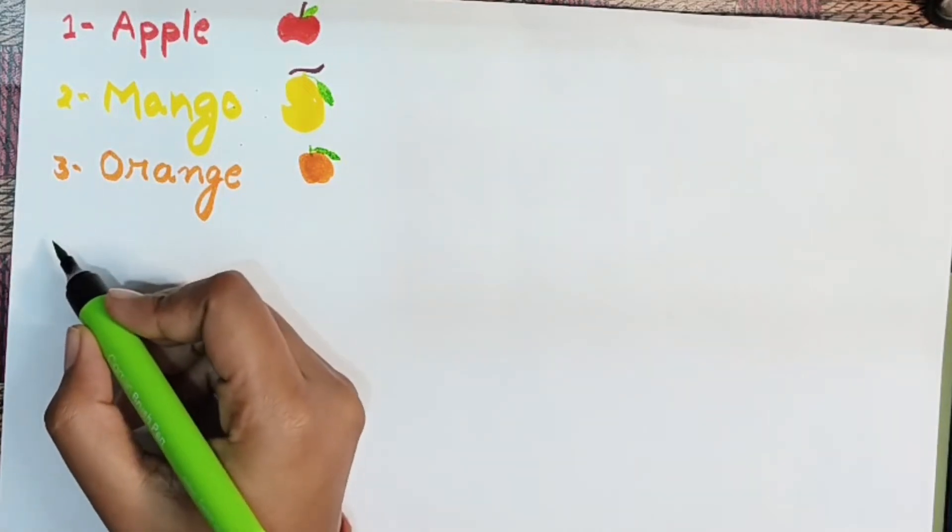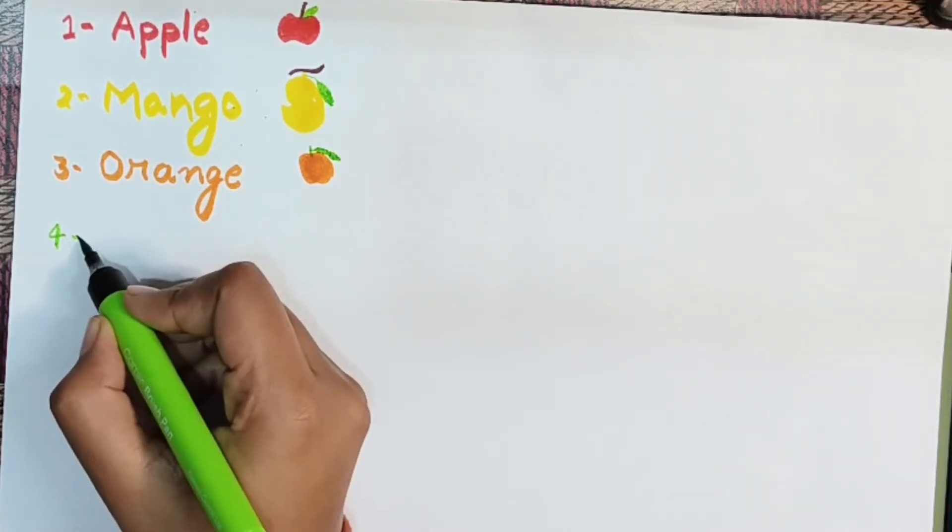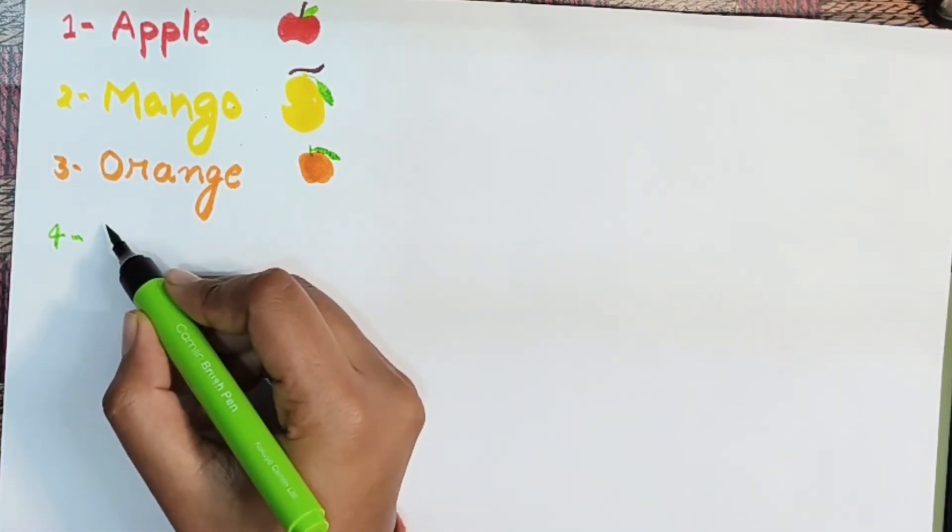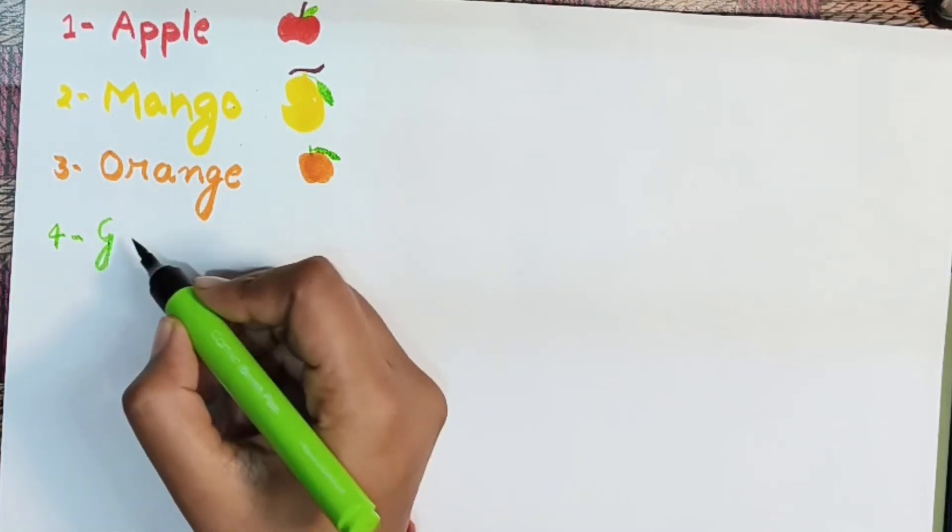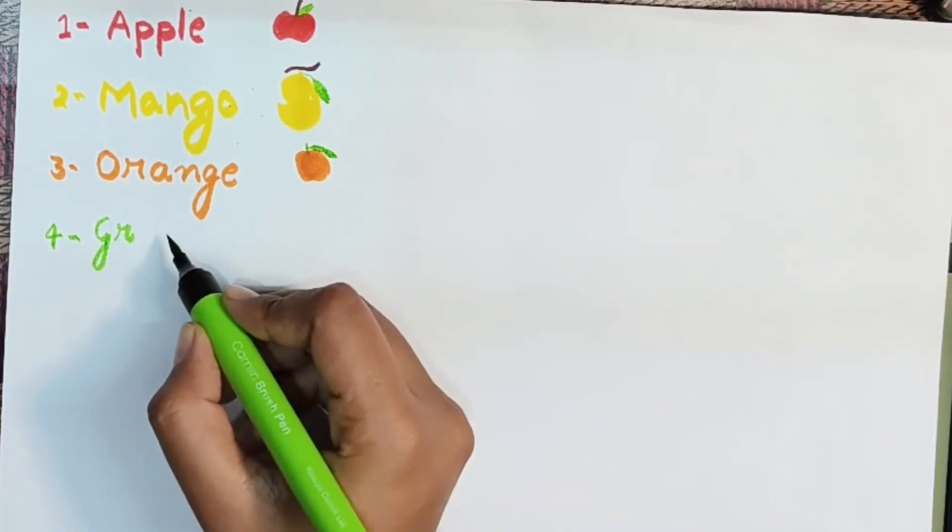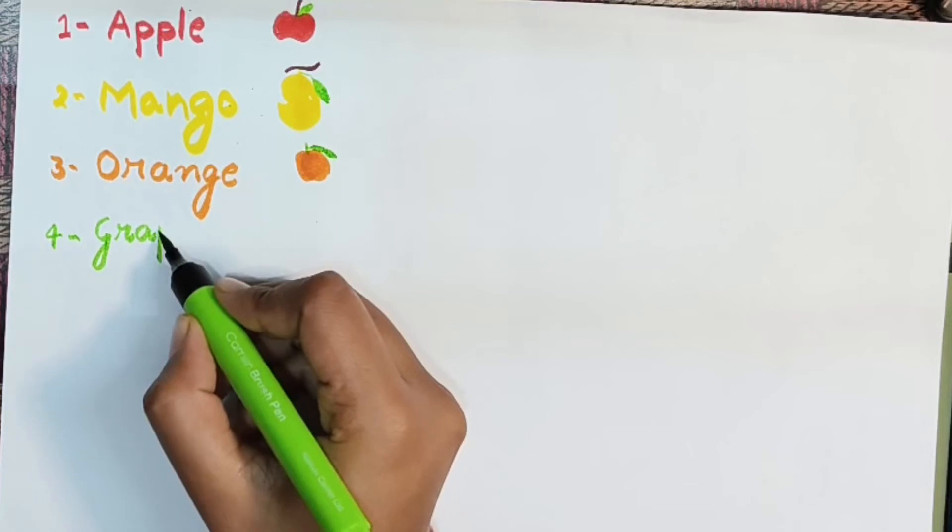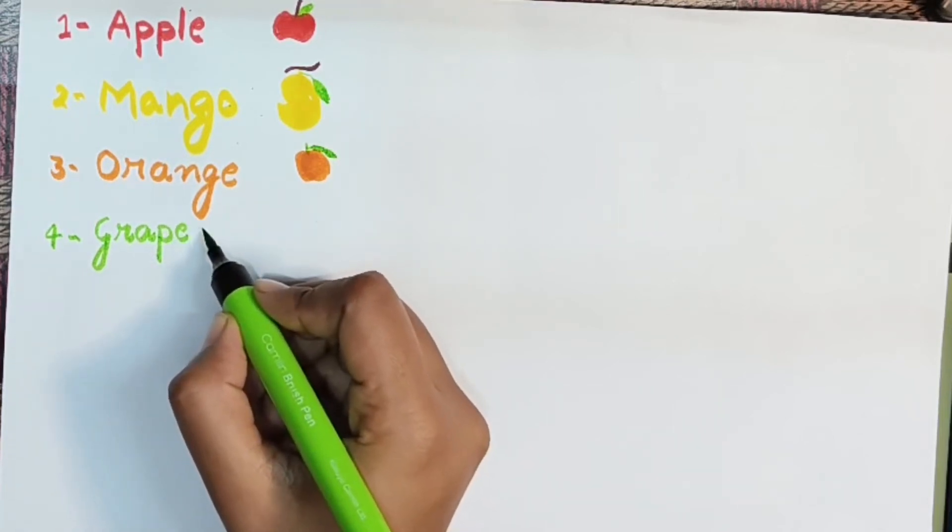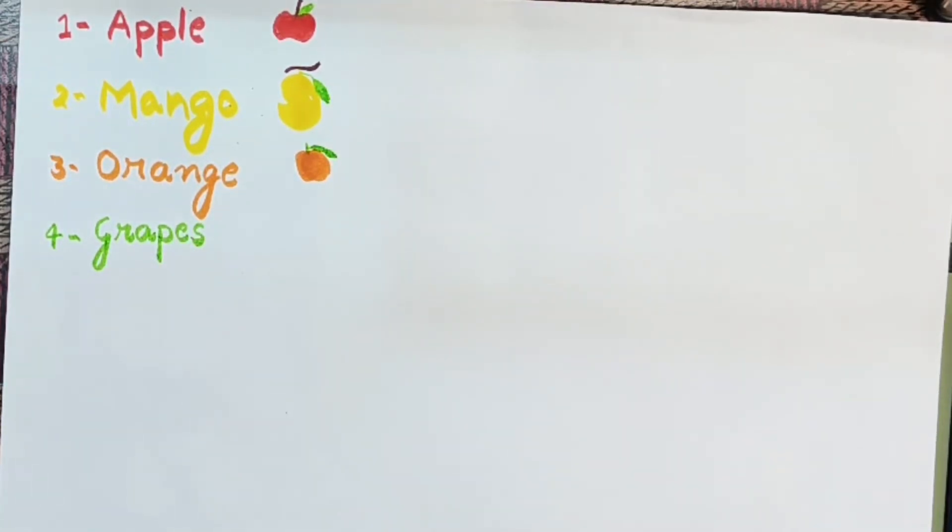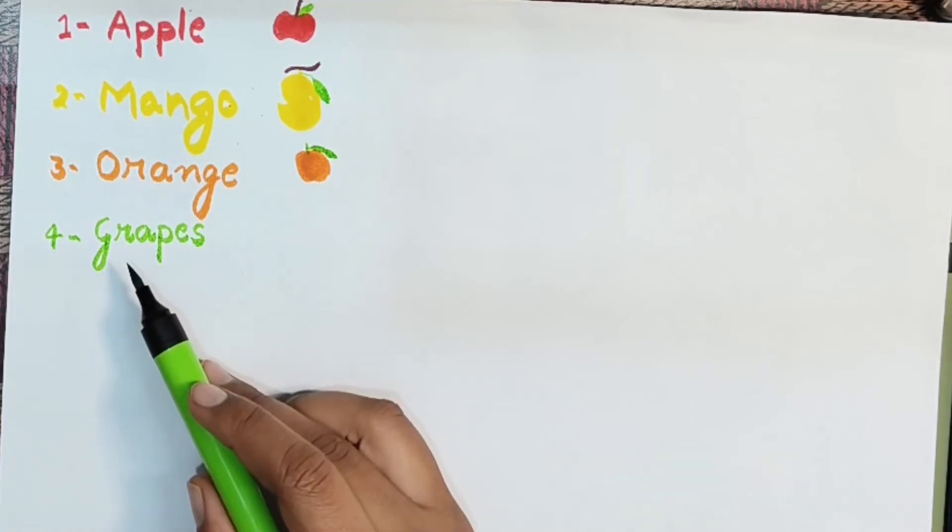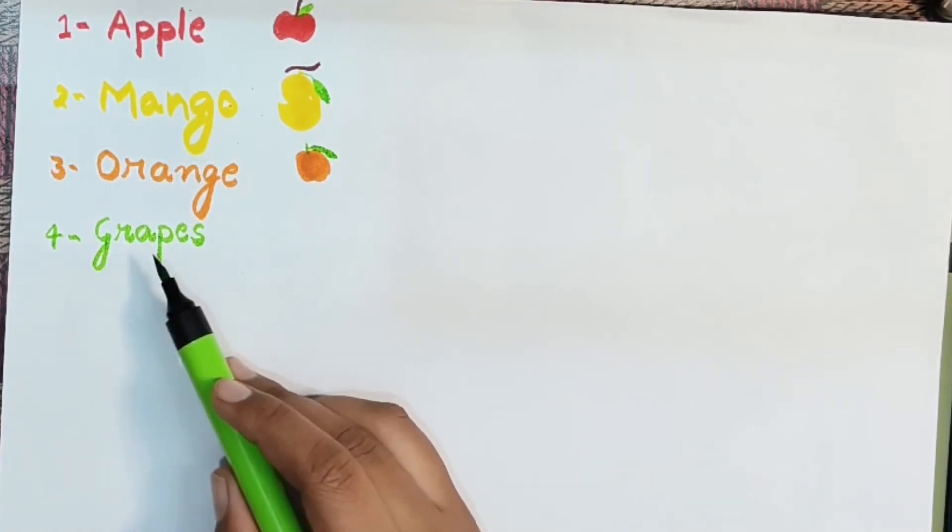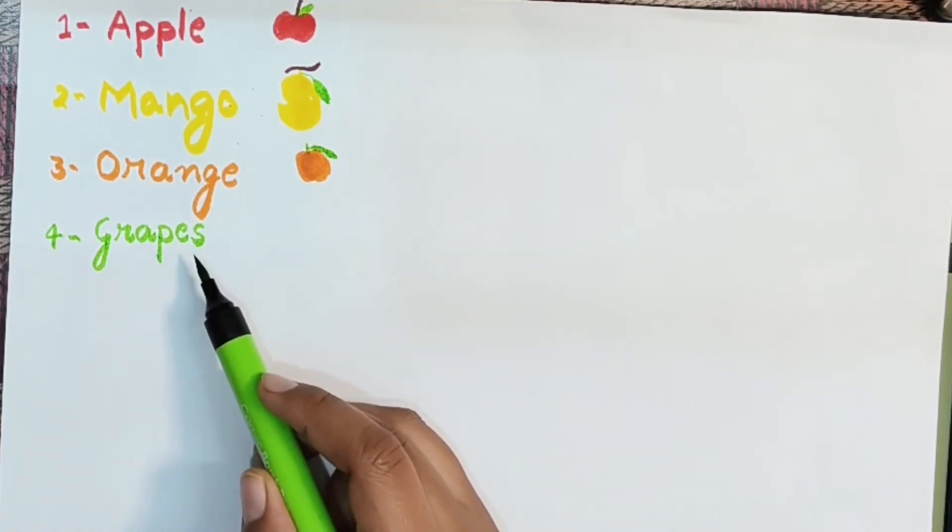Third one is grapes. Third one is grapes. The spelling of grapes is G-R-A-P-E-S. Grapes. The spelling of grapes is G-R-A-P-E-S.